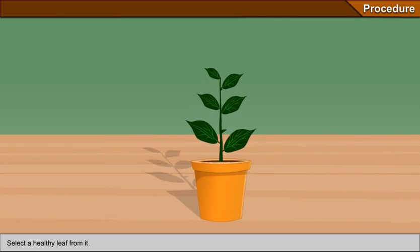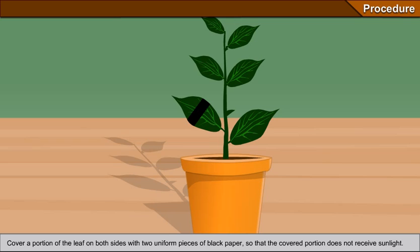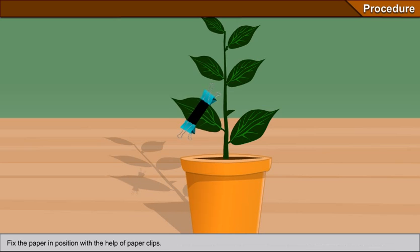After 48 hours, select a healthy leaf from it. Cover a portion of the leaf on both sides with two uniform pieces of black paper so that the covered portion does not receive sunlight. Fix the paper in position with the help of paper clips.